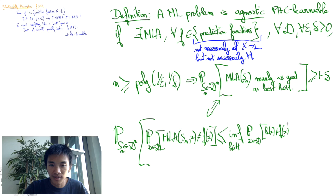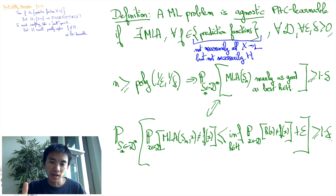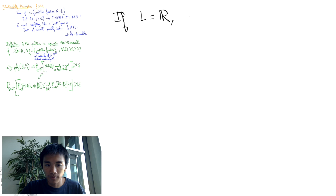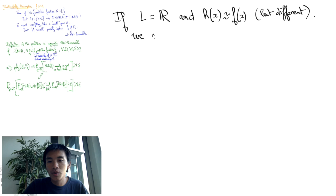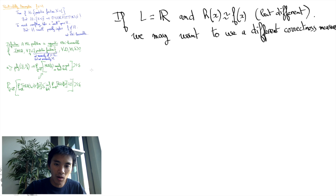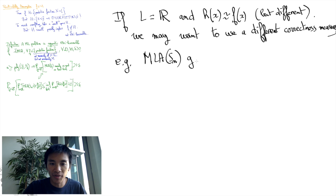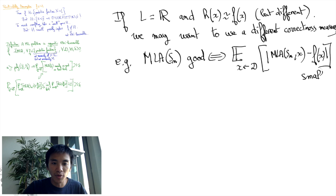Now, following the spirit of the original PAC learning concept, we have measured here the quality of a hypothesis by how often it makes correct predictions. However, this is only one of many ways to measure the quality of a hypothesis, and depending on context, there may be better ways to do so. For instance, if the labels are real numbers representing, say, a financial value of an object with features x, it may be good enough to predict a value close to the real value. In such a case, it might be better to measure the quality of a hypothesis by a loss function that measures the expected distance from the real value, or perhaps the expected square of the distance.